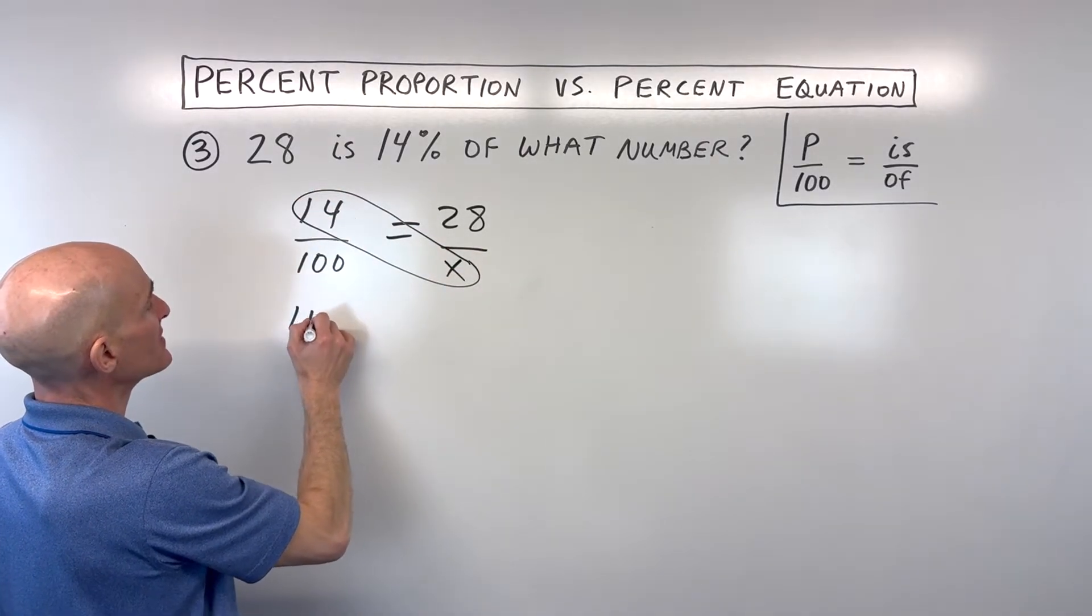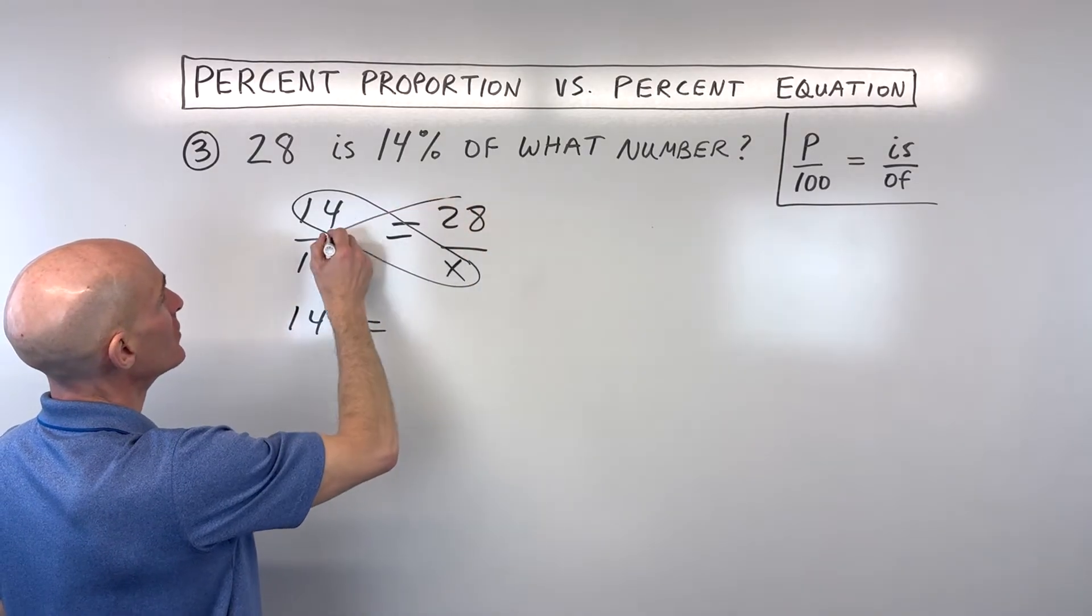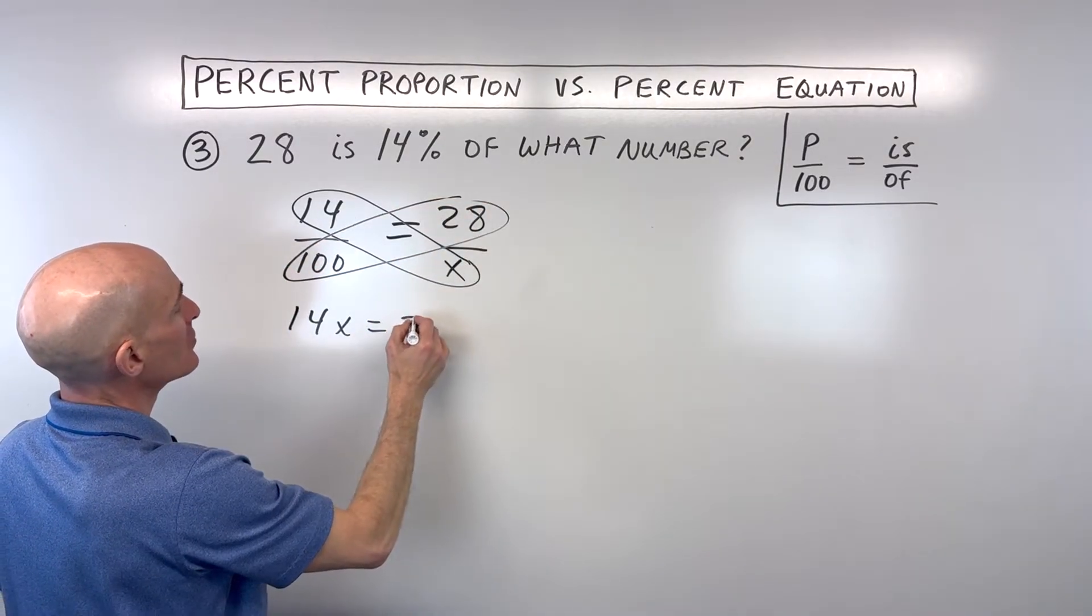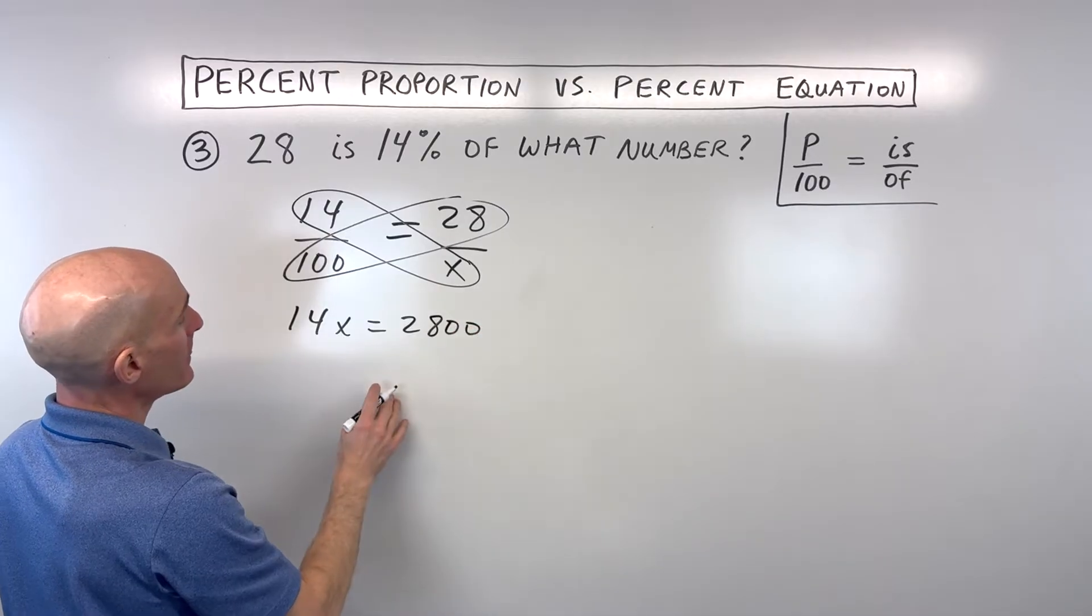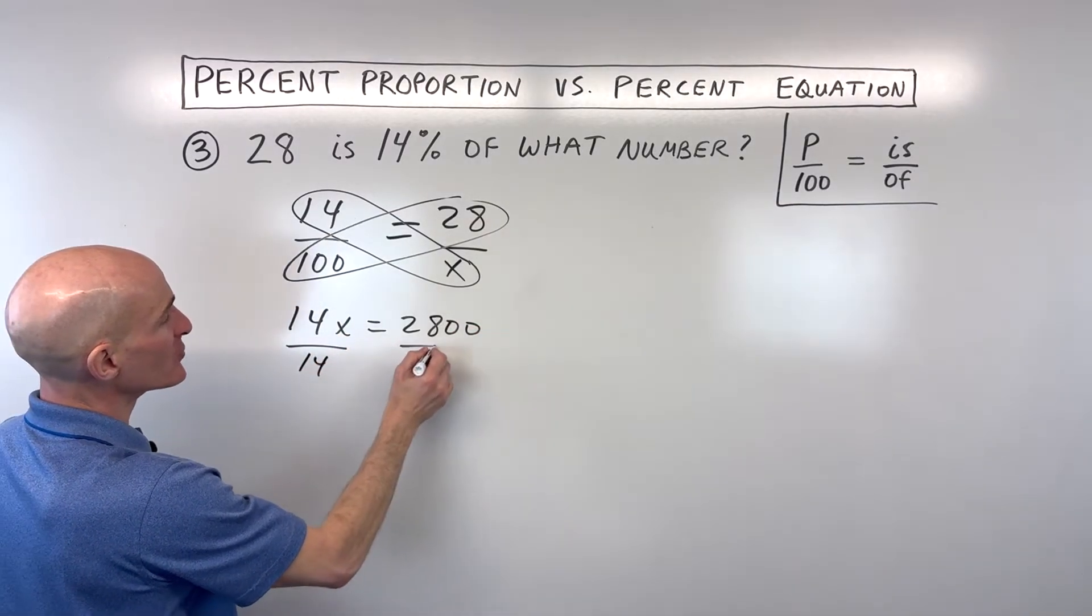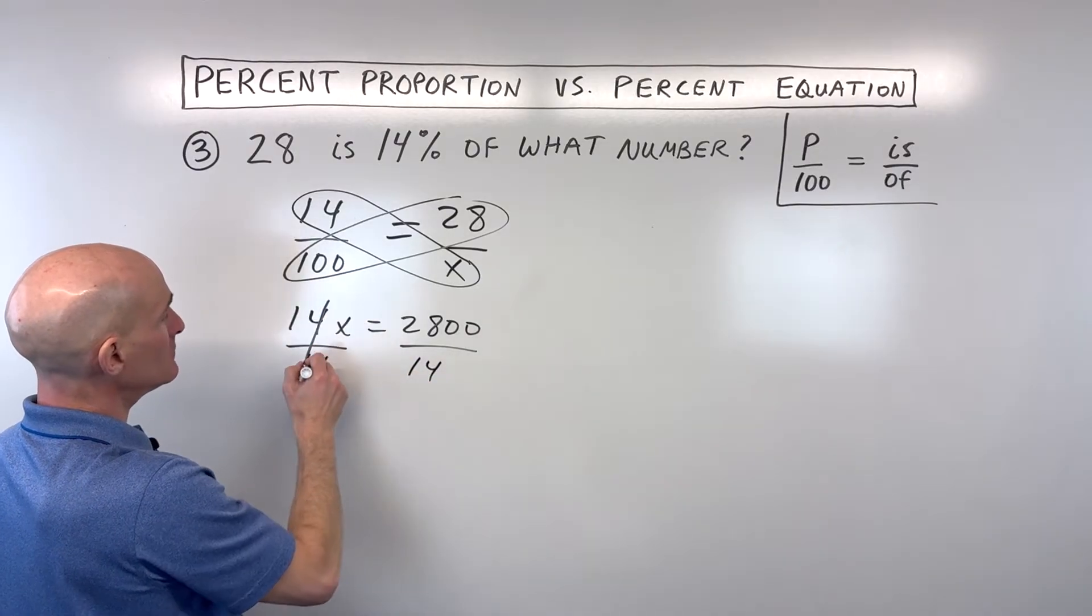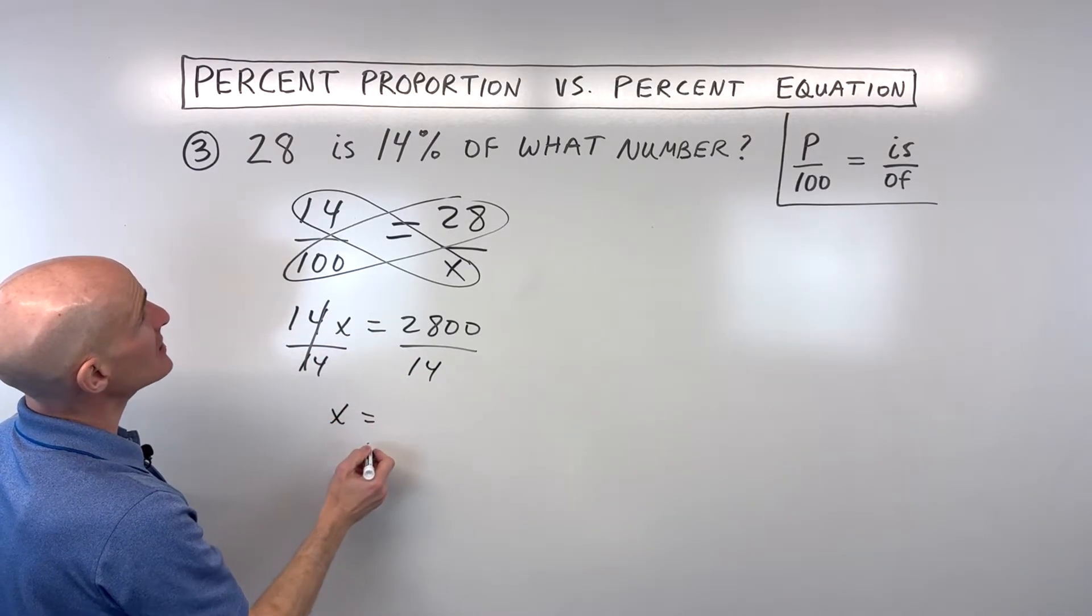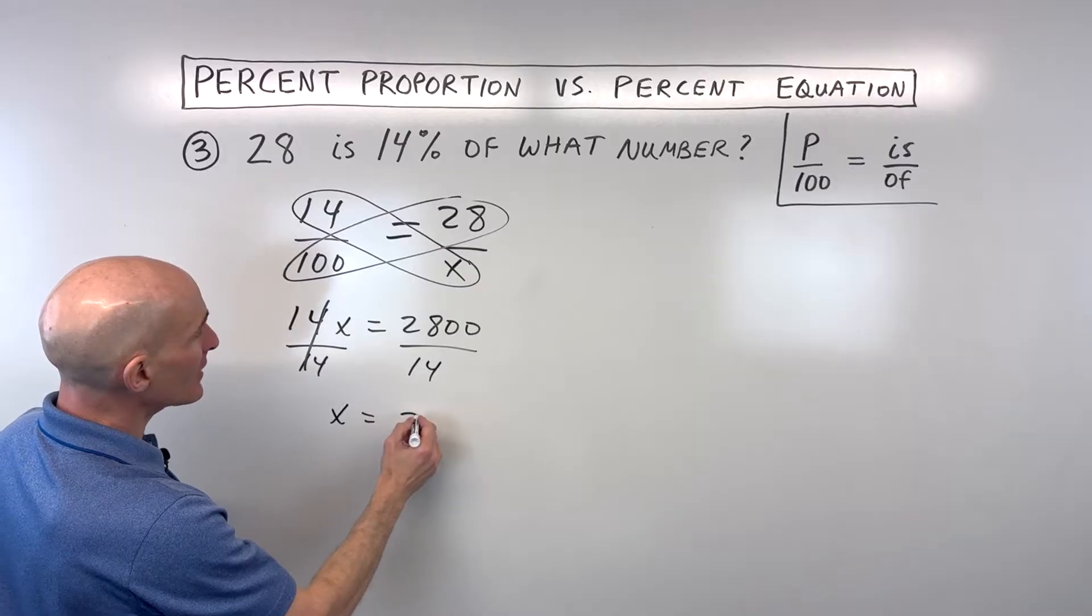We have 14 times x equals 28 times 100, so that's 2800. We're going to solve for 1x, so instead of multiplying by 14, we're going to divide both sides by 14. And this comes out to x equals 200.